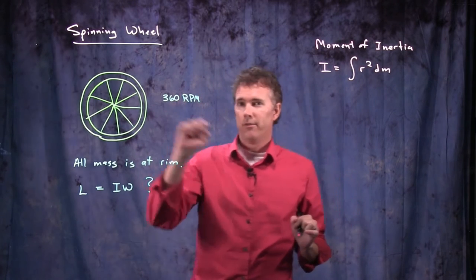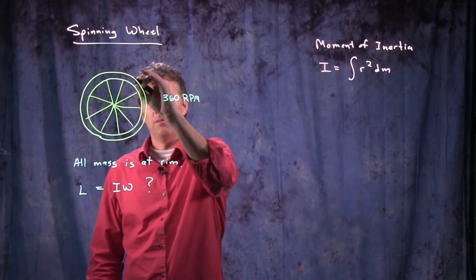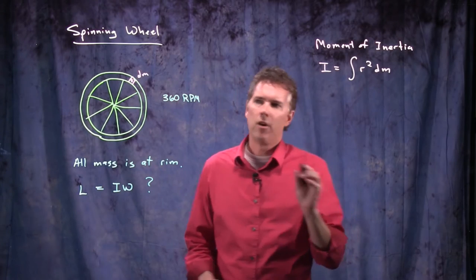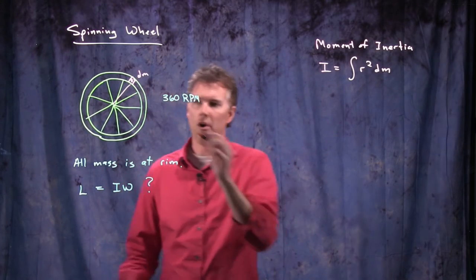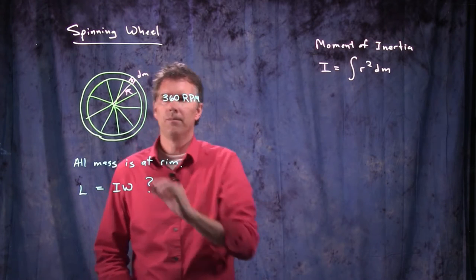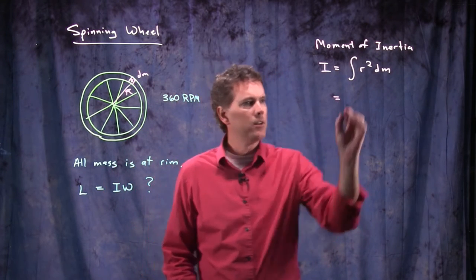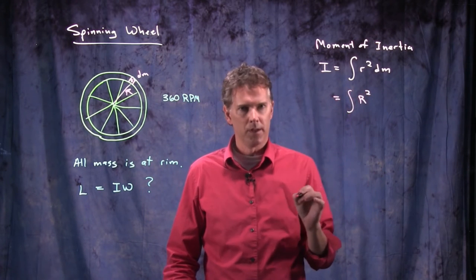The way you do that for a wheel is, you pick out a little mass element, dm. You figure out how far away from the axis it is, which is a distance r given by the radius of the wheel. And now we can just stick this right into the integral, because that mass element is capital R away from the axis of rotation.